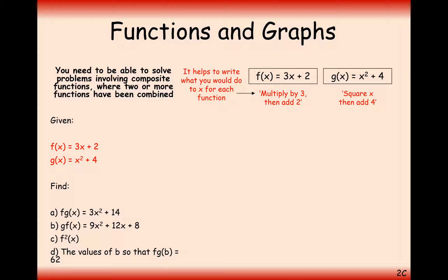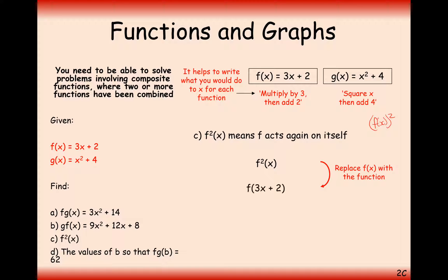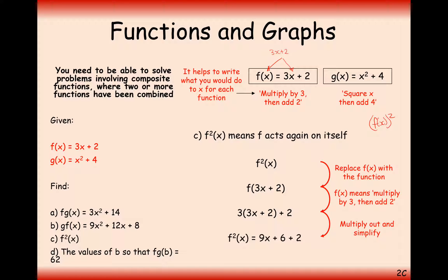Let's have a go at f²(x). Now this doesn't mean the f function squared — if it meant squaring the function, it would be notated with full brackets around it being squared. In this case it means do the f function first and then do the f function again. So we do the f function once, which is to triple the value inside the bracket and add 2. Now we have to do it again, so both x values are replaced by 3x + 2. We're tripling whatever's inside the bracket, which is 3x + 2, and adding 2, giving us 9x + 6 + 2 = 9x + 8.